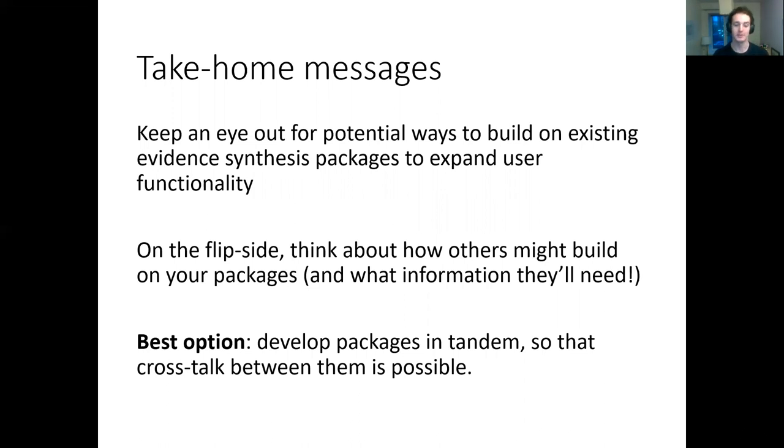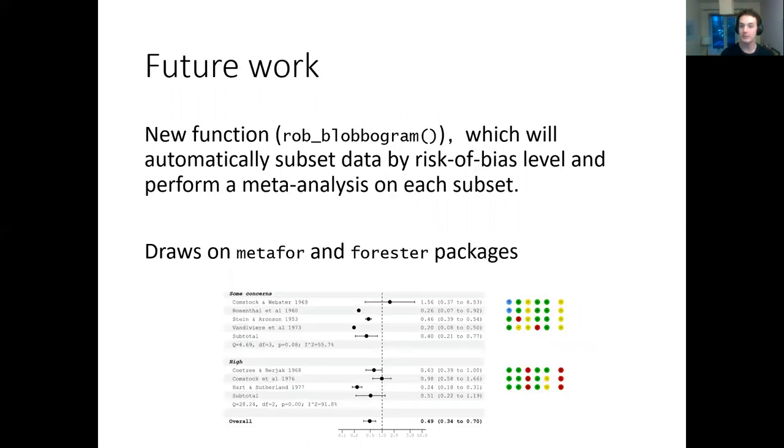By far the best option is to try and develop packages in tandem. If you think you're going to be working quite closely or need to rely quite closely on another package, reach out to that maintainer and see if there's any way to develop together. This is exactly what's happening in a further function that's going to be coming to RobViz quite soon: rob_blobogram. It's being developed in tandem with the forester package by Randall Boyes. This will allow users to automatically subset the data by risk of bias level and then perform a meta-analysis on each subset.